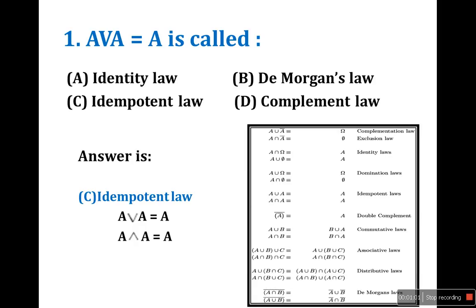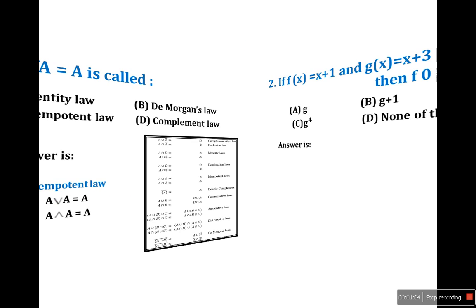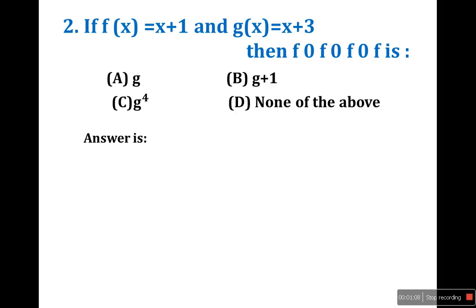The second question is a bit tricky. If f(x) = x + 1 and g(x) = x + 3, then the composite function f of f of f of f of x — the answer choices are: g, g+1, g raised to 4, or none of the above. Now, don't suddenly select D just because you're in a hurry during the exam.